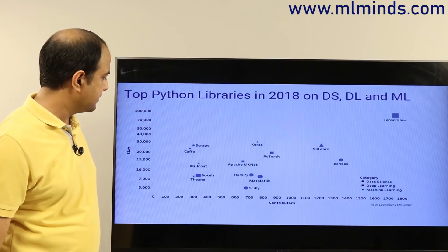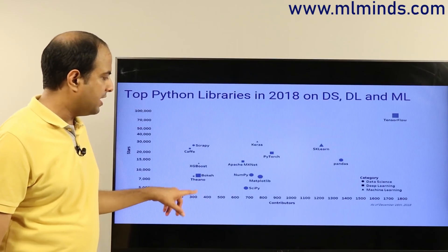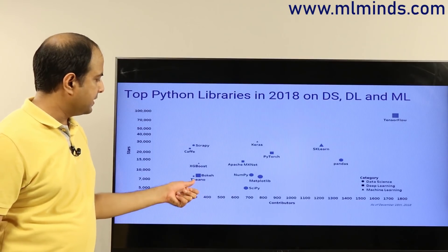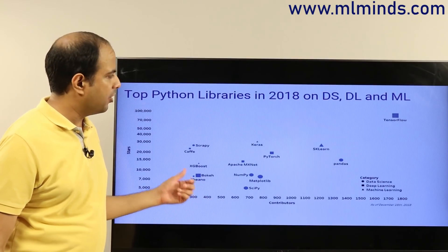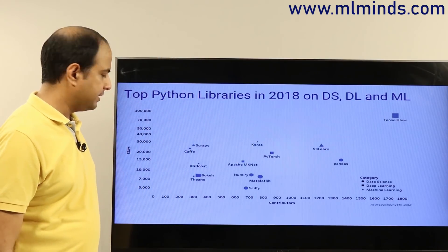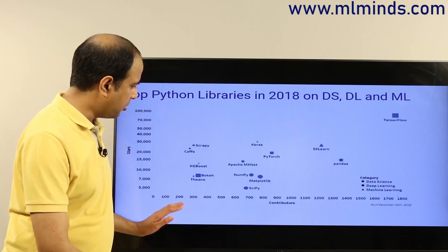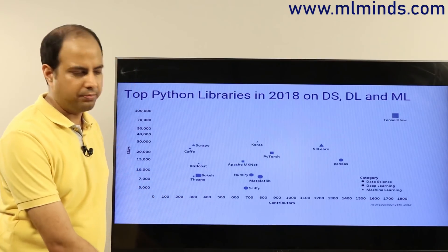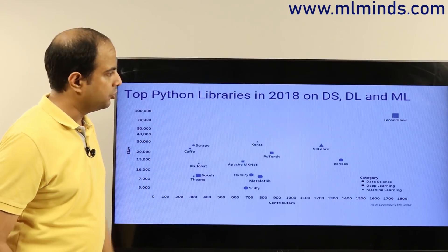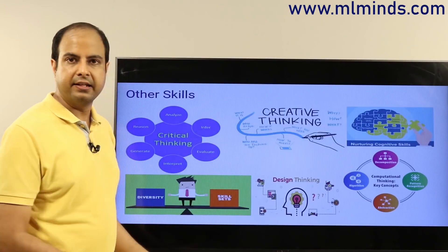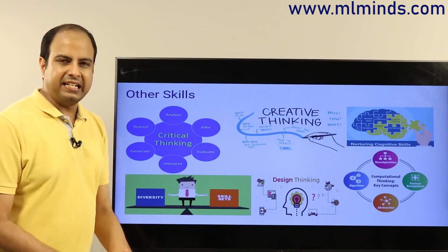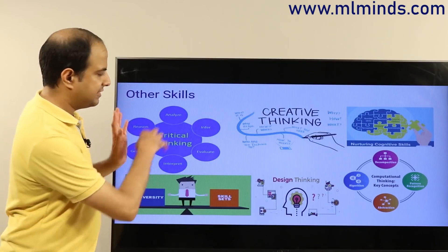MXNet is also used for deep learning, and numpy, scipy, matplotlib, and bokeh are used for basic data science and numeric computations. Theano was an older library that was useful for deep learning but is no longer very popular. Now, TensorFlow has a lot of contributors and stars, so if you want to do excellent deep learning, you must know TensorFlow.